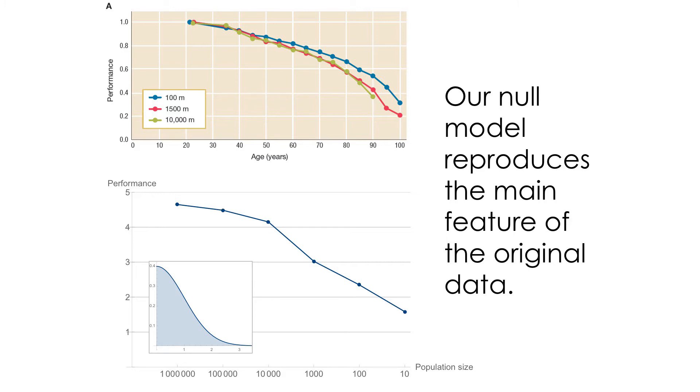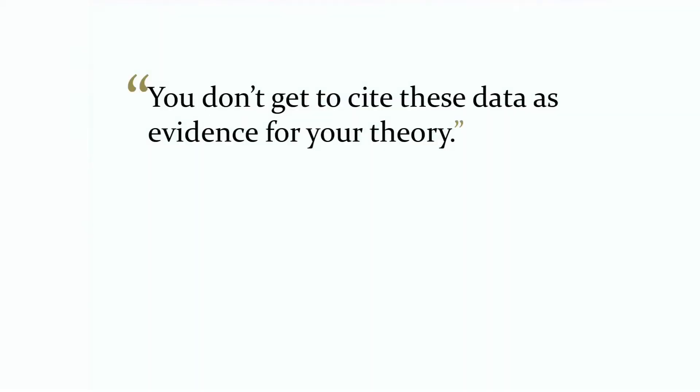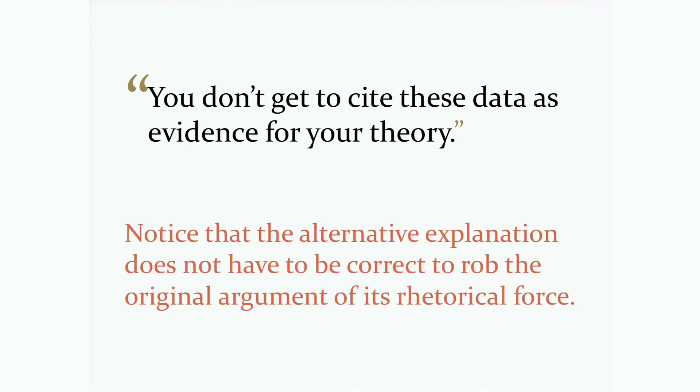Here our null model reproduces the same feature of the original data, so it wasn't strong enough to support it. So here's the thing: you can't cite these data as evidence for your theory. If you can do this effectively, this takes practice, but it's a very common way to refute many of the things that you may see veiled in data and in figures, something that Carl and I use quite often. Notice here that the alternative explanation does not even have to be correct, but in this case I claim it is, to rob the original argument of its argumentational and rhetorical force.